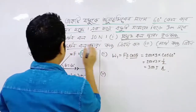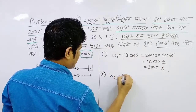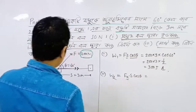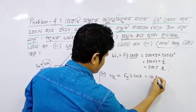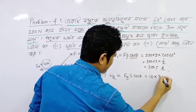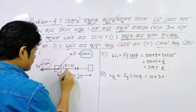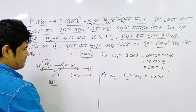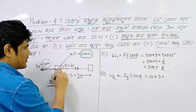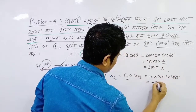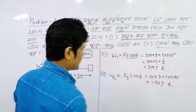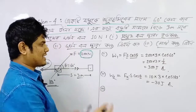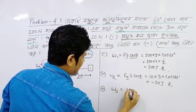We know that W2 is equal to fs·cosθ. So F is equal to 10 N, s is equal to 3 meters. W2 is computed using the angle at 80 degrees, giving the value of W2.